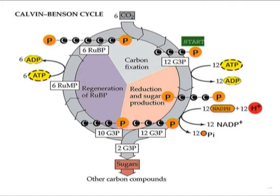To make 1 glucose molecule, which can be created from 2 G3P molecules, it would require 6 turns of the Calvin cycle. Surplus G3P can also be used to form other carbohydrates such as starch, sucrose, and cellulose, depending on what the plant needs.